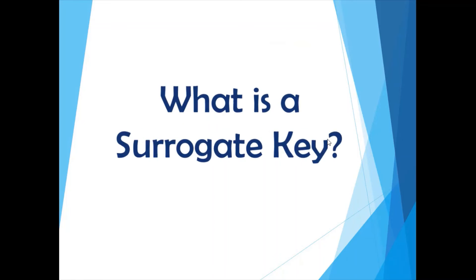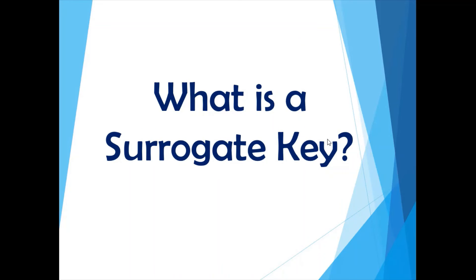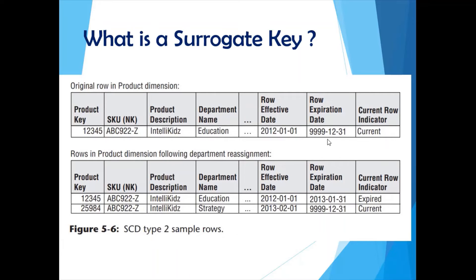The fourth question: what is a surrogate key? Going back to the type 2 dimension — when we inserted the new record with the new value, we now have two records. The SKU, which is your business key, remains the same for both records. However, the product key column has changed its value. This product key column is your surrogate key.